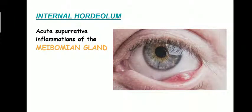The second eyelid disease is internal hordiolum, which is due to acute suppurative inflammation of the meibomian gland, which is also an accessory lacrimal gland. Etiology is due to infection by Staphylococcus aureus, or it occurs secondary to chalazion — when a chalazion gets infected, it turns into internal hordiolum.